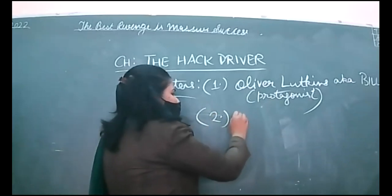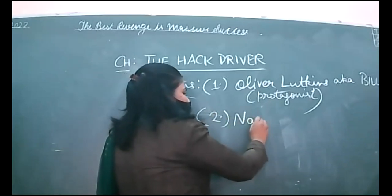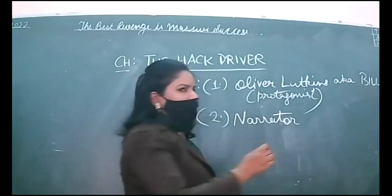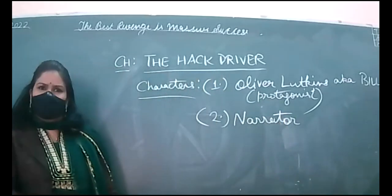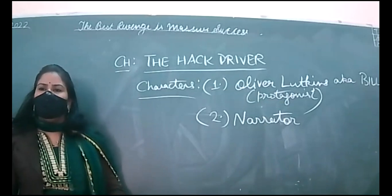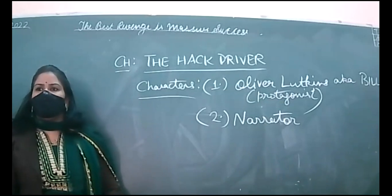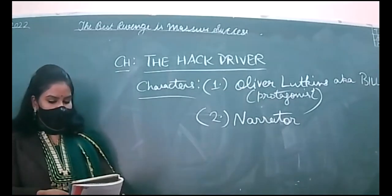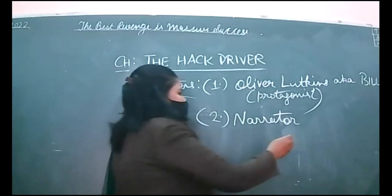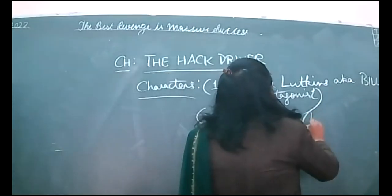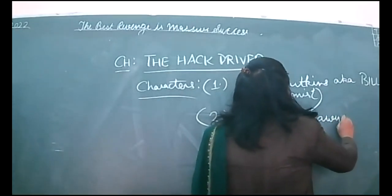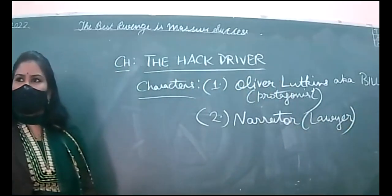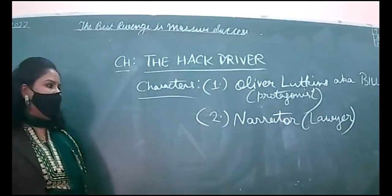The second character is the narrator himself. These two are the prominent characters and you should be able to understand the story easily. The narrator is actually a lawyer by profession. There is some tough vocabulary in this chapter.